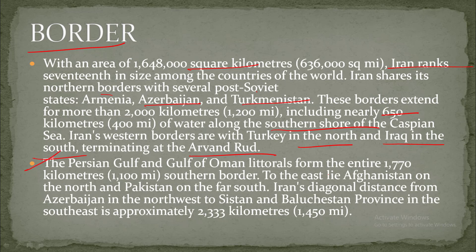The Persian Gulf and Gulf of Oman littorals form the entire 1,770 kilometers of the southern border. To the east lie Afghanistan in the north and Pakistan in the far south.